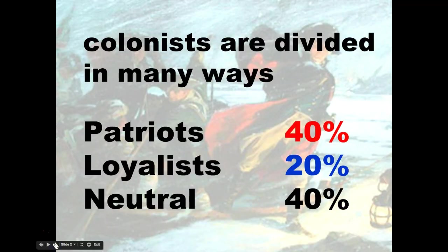This is a graphic that talks about how colonists were divided. There are a lot of different theories on what the final percentages were, so I don't want to get caught up too much on the actual number. The main thing I want to address is that not every colonist was fighting for independence. This is one interpretation of how it broke down: maybe about 40% patriots, maybe about 20% loyalists, and then maybe about 40% of the colonists were neutral.